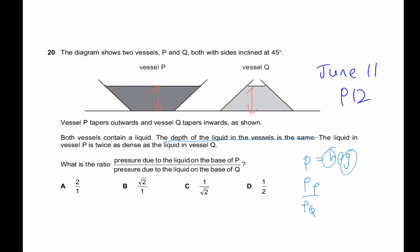So then you'll be just the density of P over the density of Q. Now they did tell me the liquid of vessel P is twice as dense as the liquid in vessel Q, so this is 2 to 1, so the answer will be A.